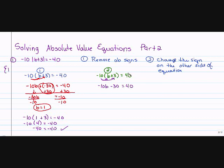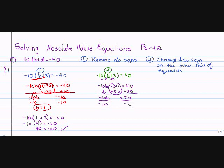Remember, you changed the sign on the 40. I'm going to move the negative 30 over to the other side by adding 30. Bringing down my negative 10B — I didn't do anything to it. This gives me zero on the left. Now 40 is no longer negative, so 40 plus 30 is 70. I still need to isolate B, so I divide by negative 10, and B equals negative 7.